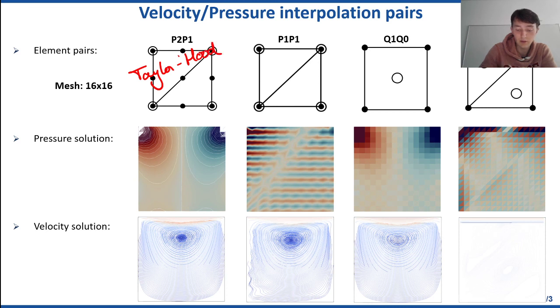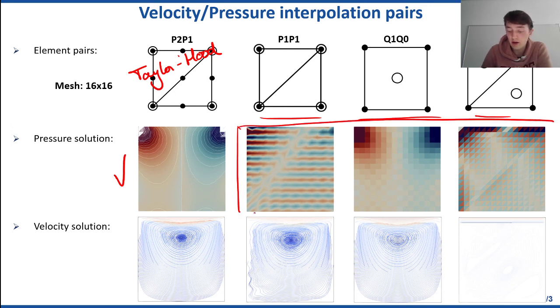The Taylor-Hood element. Then we obtain results that are fine, that are stable. And for many other choices of elements, we obtain results where particularly the pressure field ends up being very, very poor. And this has to do with spurious oscillations, pressure modes, and this is something that we'll also talk about in more detail. An interesting thing here was that despite this horrible shape of some of these pressure solutions, we might still be able to obtain reasonable solutions for our velocity field.